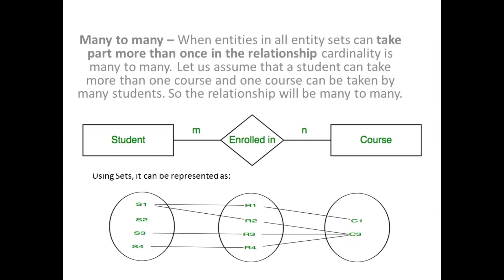Many-to-many: when entities in all entity sets can take part more than once in the relationship, the cardinality is many-to-many. Let us assume that a student can take more than one course and one course can be taken by many students, so the relationship will be many-to-many. Here you can see m students can enroll in one course and one course can be taken by more than one student.